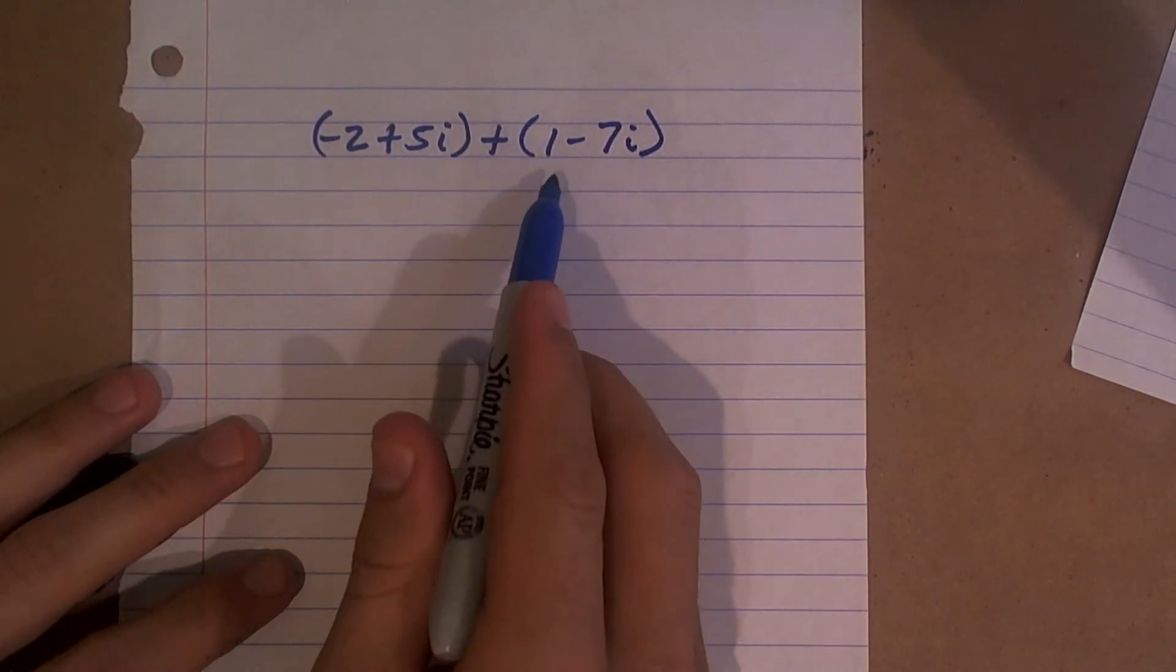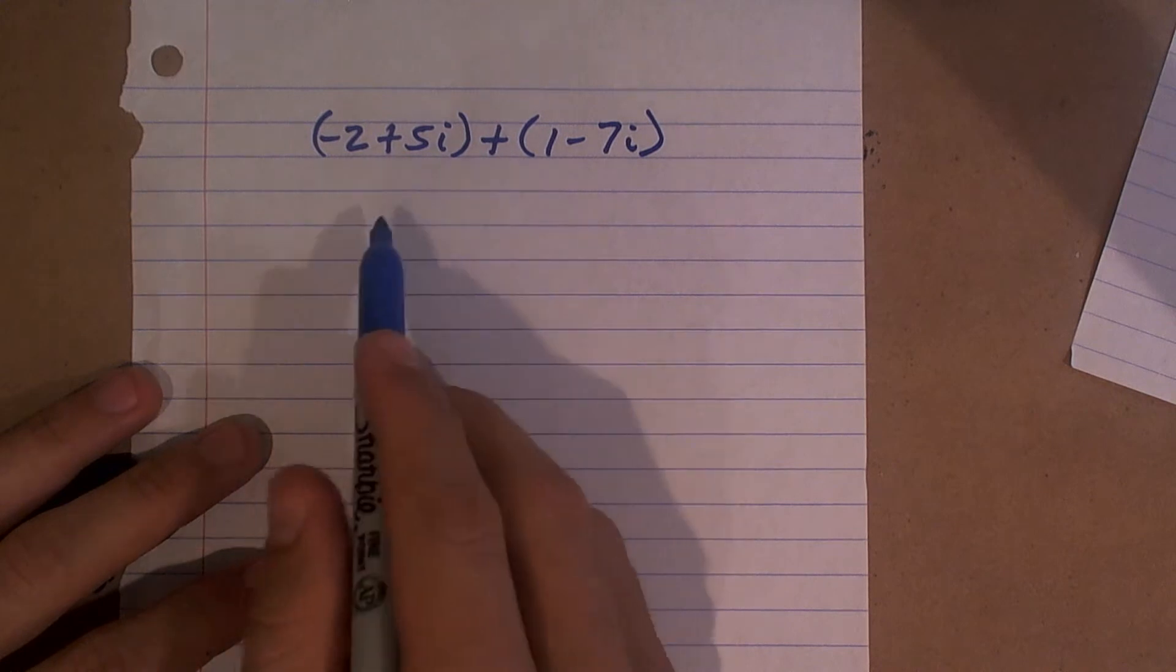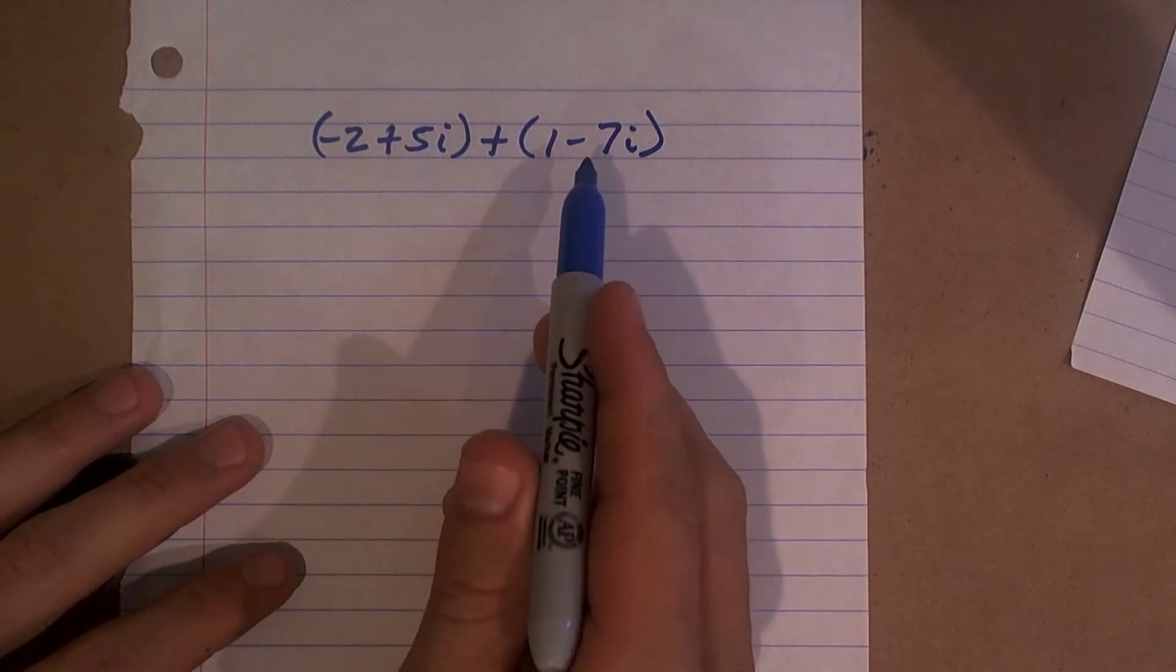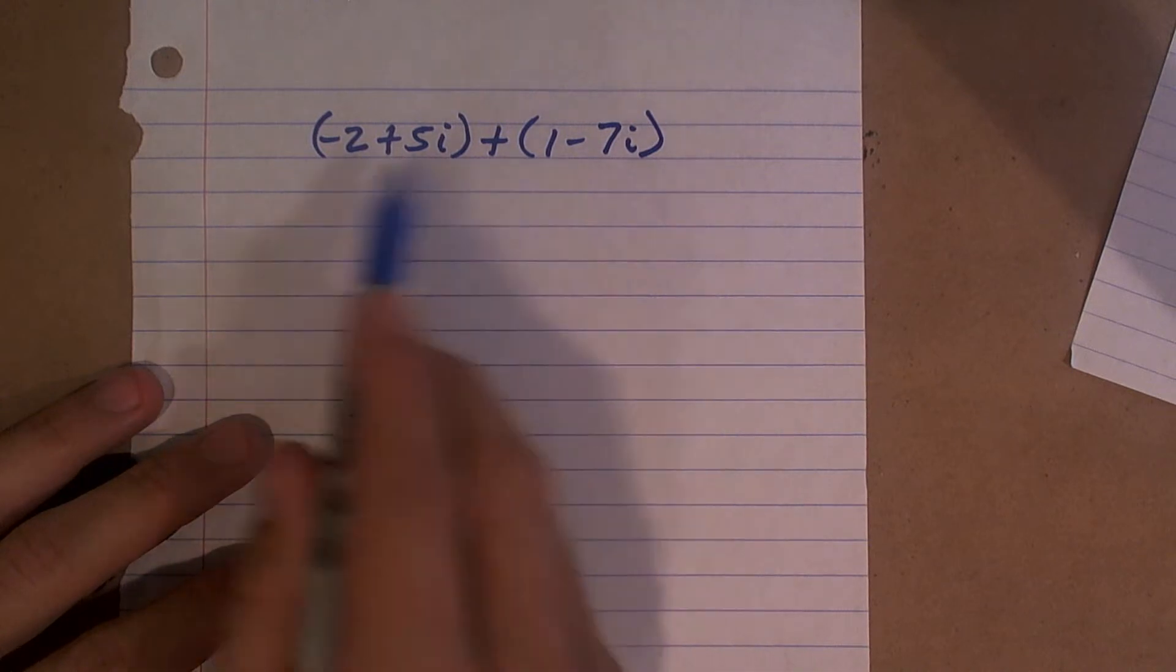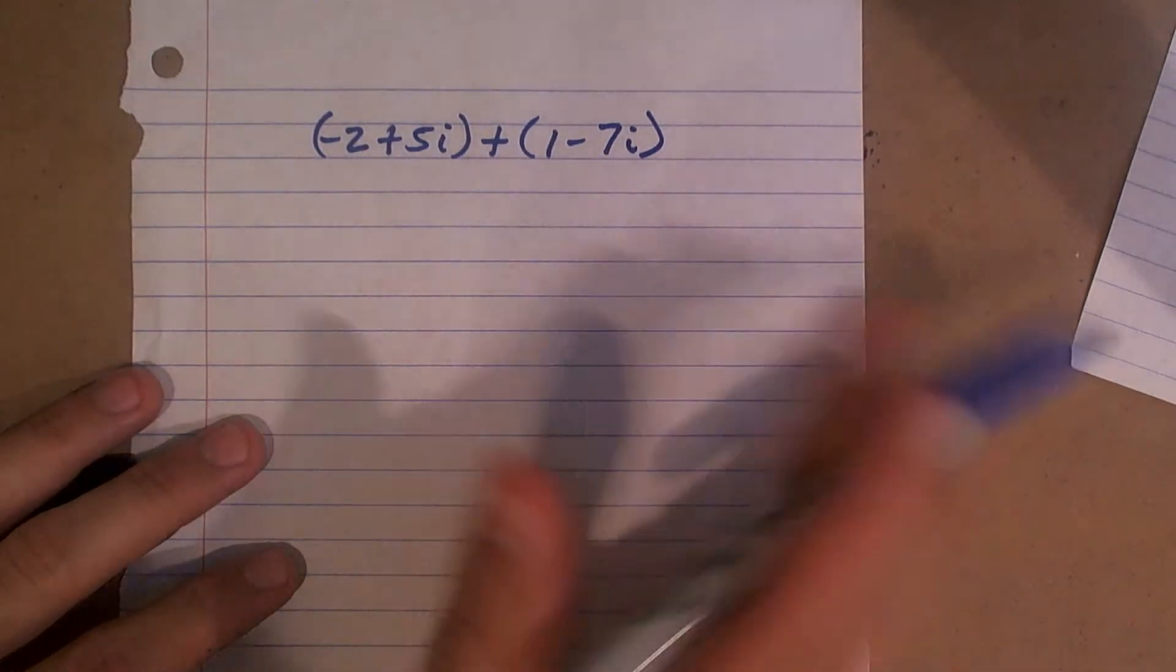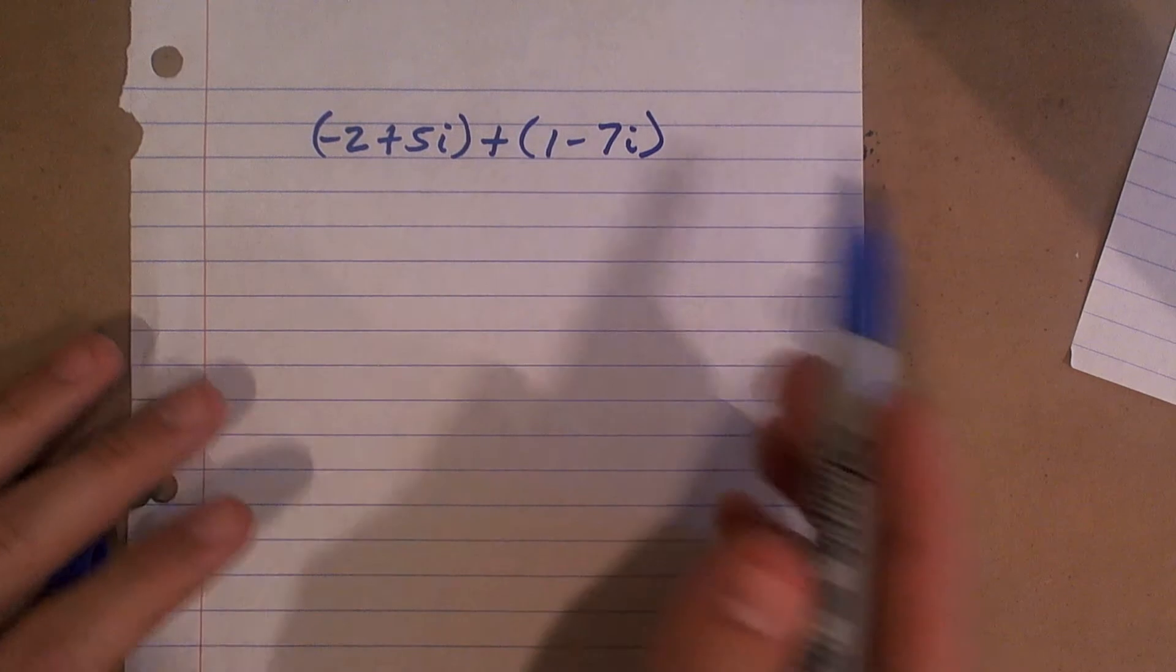So when we're adding complex numbers, a couple things can work. One is the commutative property of addition is going to work, meaning I can rearrange these and I'm not going to change the addition problem.